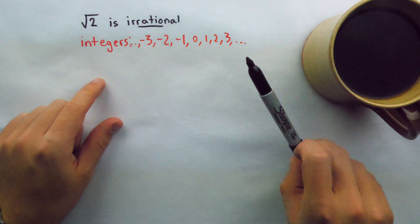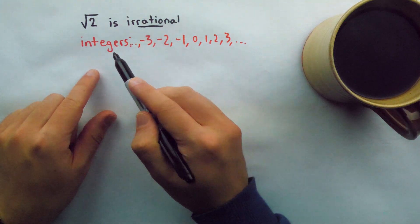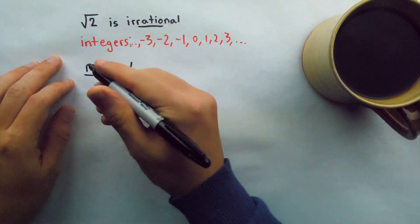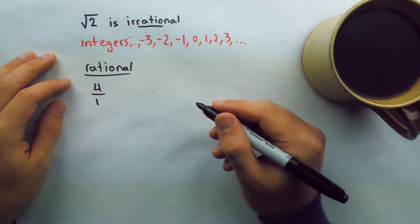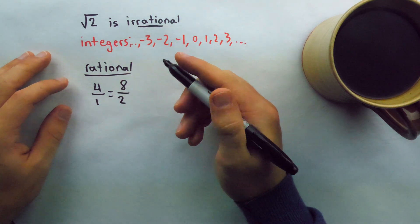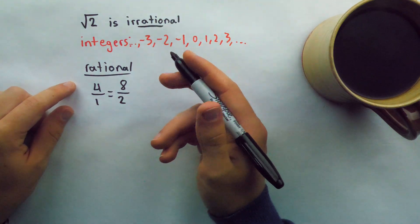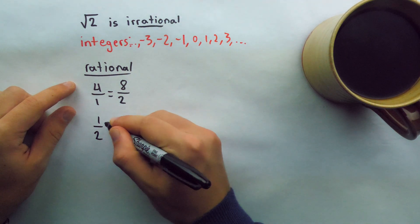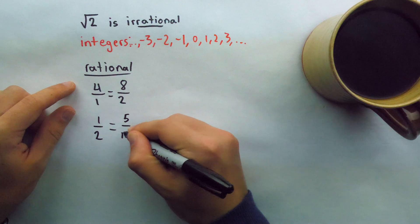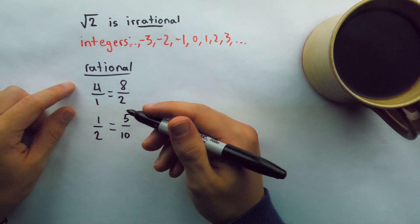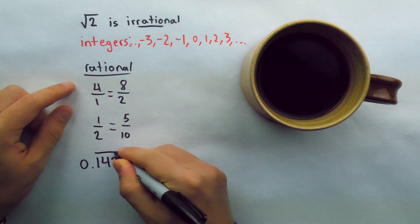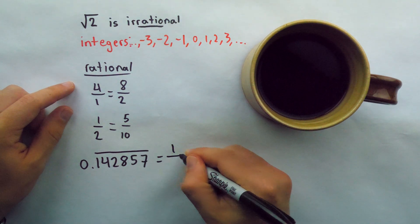For a number to be irrational means that it can't be expressed as a ratio of two integers. For example, 4 is rational because you could write 4 as 4 over 1. These representations aren't unique — we could also express 4 as 8 over 2. Another rational number is 1/2, because you can write it as a ratio of two integers. It is also equal to 5 tenths, for example.